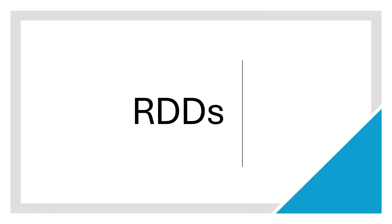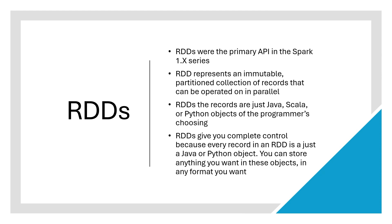Now let us look at RDDs in detail — what they are and why they are used. An RDD is a basic building block of Spark. RDDs are resilient distributed datasets, and they were introduced as the primary API in the 1.x series of Spark. An RDD is an immutable partitioned collection of records which can be operated on in parallel. It is immutable, so whenever you do any transformation or action on an RDD, it will create a new RDD. That's why we say RDDs have a lineage — every time you perform an action, a new RDD is created rather than manipulating the existing one.